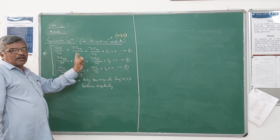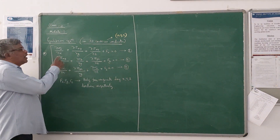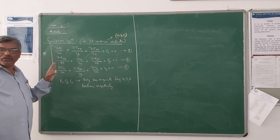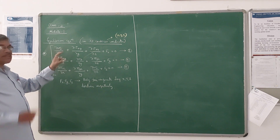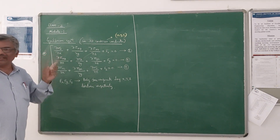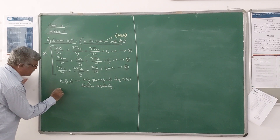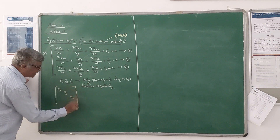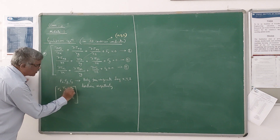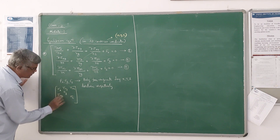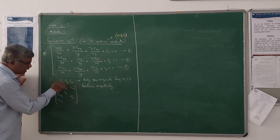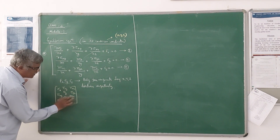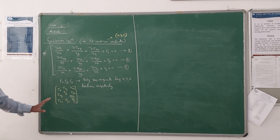In three dimensional Cartesian coordinates, equilibrium equations are written like this. This is the stress tensor. The stress tensor components are: sigma X, sigma Y, sigma Z, tau XY, tau XZ, tau YZ. The tensor is symmetrical. This is the stress tensor.